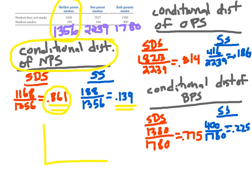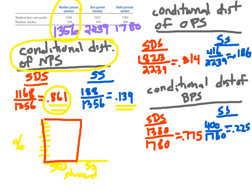You could make a bar graph for this. Down here I'll put 'student smoking behavior' — student doesn't smoke, student smokes — and on the y-axis: 10, 20, 30, 40, 50, 60, 70, 80, 90 percent. This bar is a nice big one at about 86 percent, and this one is a little bit smaller. This is a bar graph of the conditional distribution when neither parent smokes. I've done the numbers for the other columns too, and you could make bar graphs for those as well.